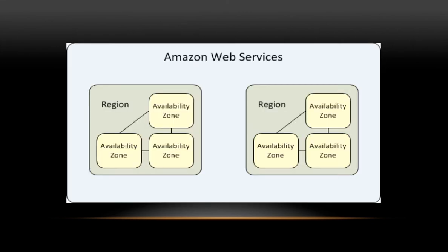The diagram on the screen right now will help you visualize what we just discussed. The entire AWS services infrastructure is divided into regions — regions are separate geographical areas — and every region has multiple availability zones.